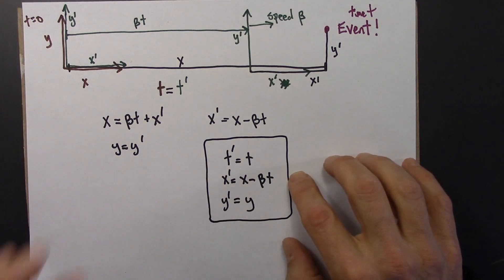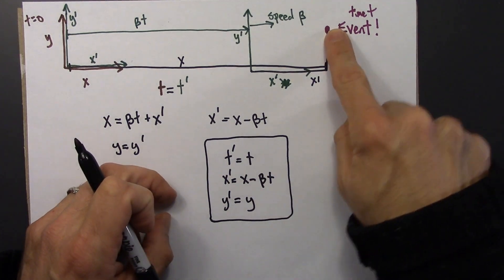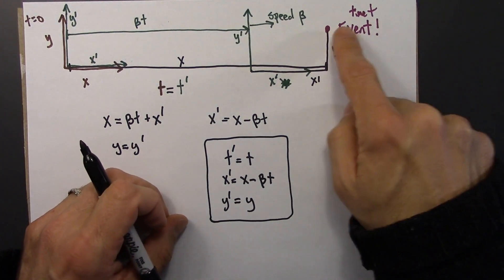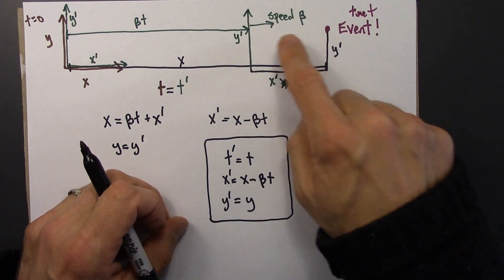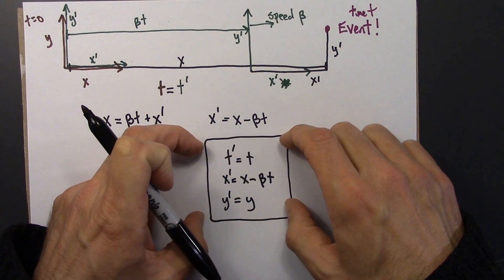Alright, so this is what we're after. This is a way to translate space-time coordinates for a particular event from one frame to another and back again. So you can think of this as a dictionary.